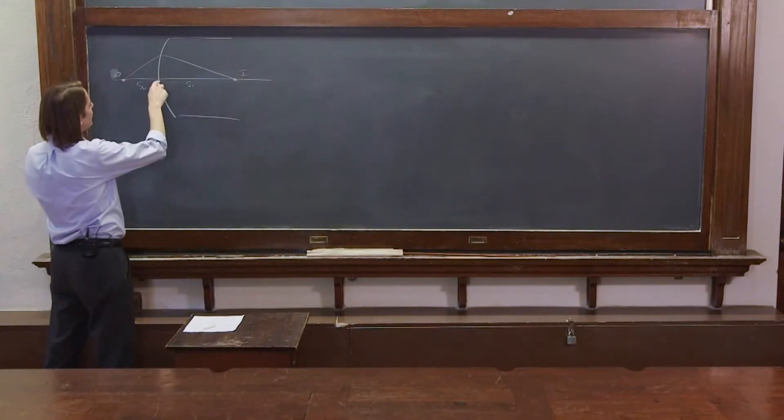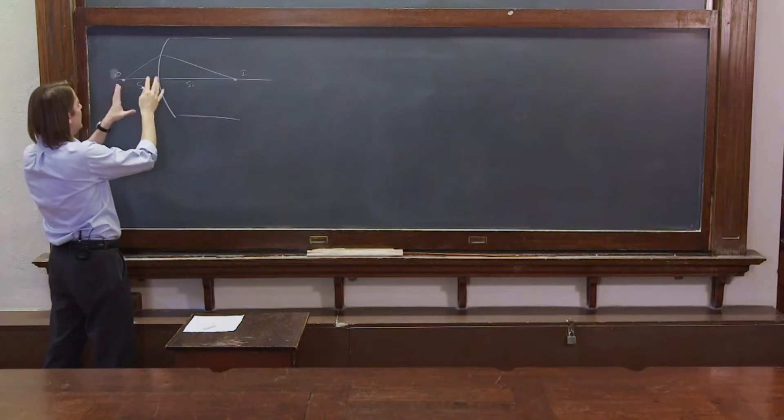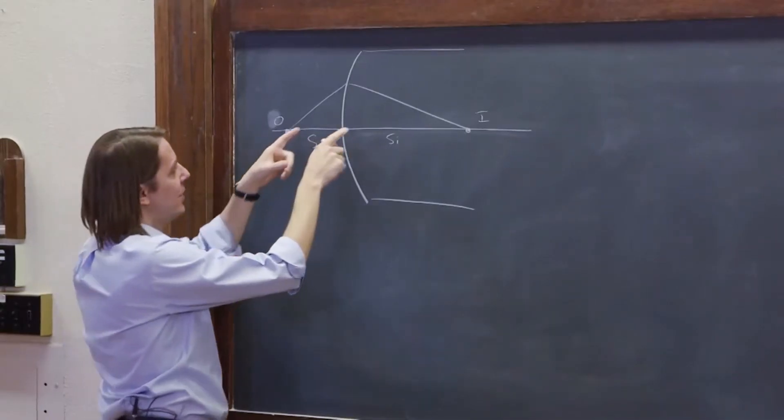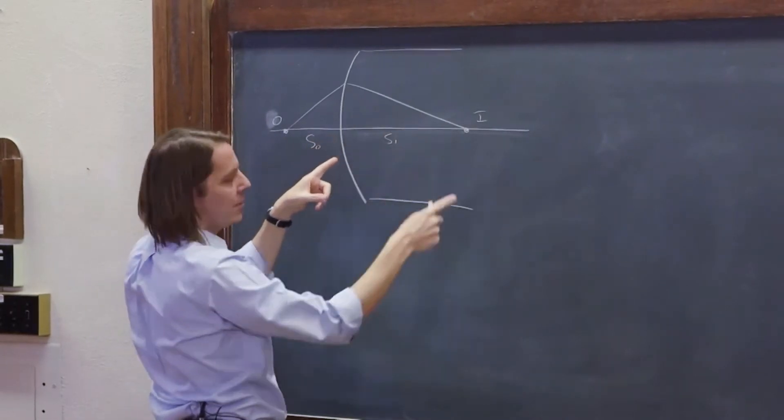Now you can kind of think of this as an origin, but keep in mind that by definition or by convention, the object distance is positive on the left of the glass, and the image distance is positive on the right of the glass. So it's not really an origin where it goes plus and minus.